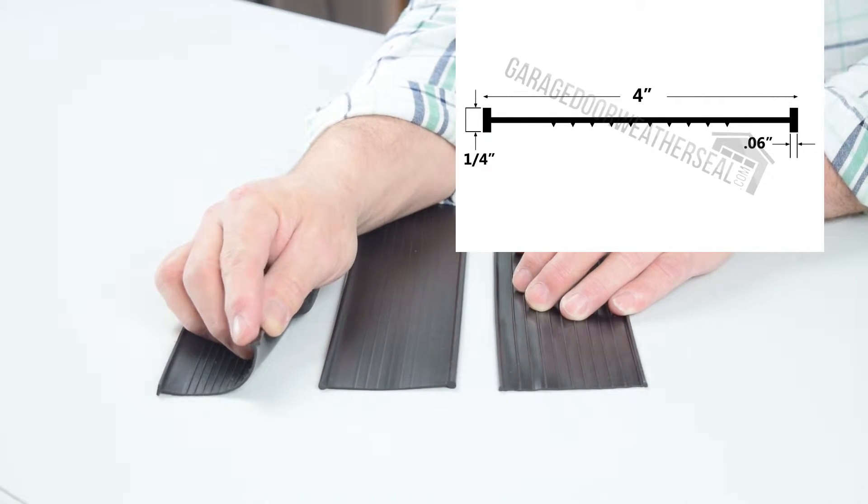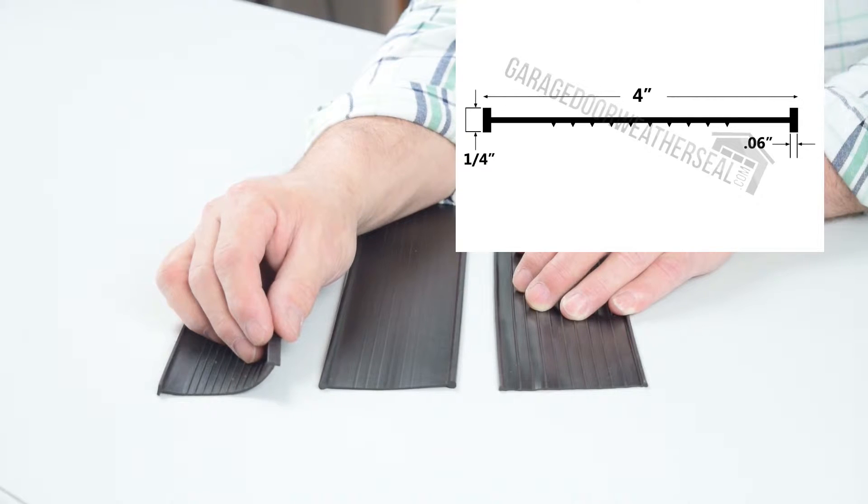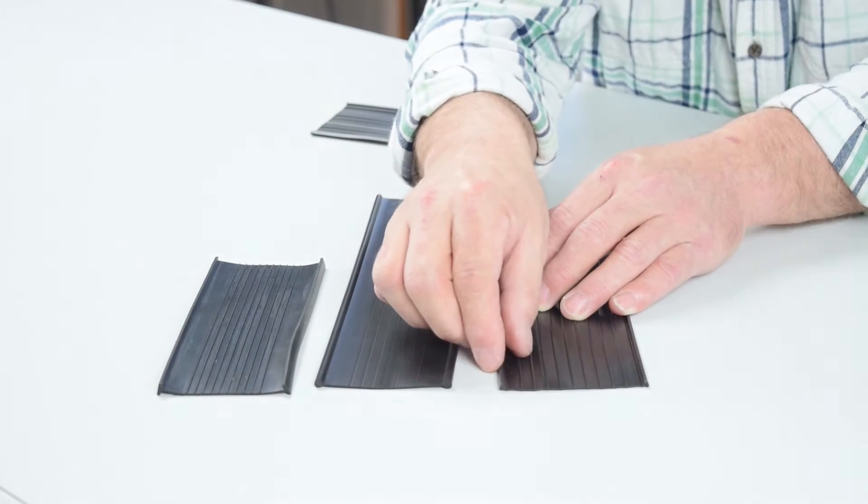If you do, measure the width of the T. It's probably a quarter—quarter's the most common. There is five-sixteenths—we carry both. But this isn't what we want to pay attention to today.